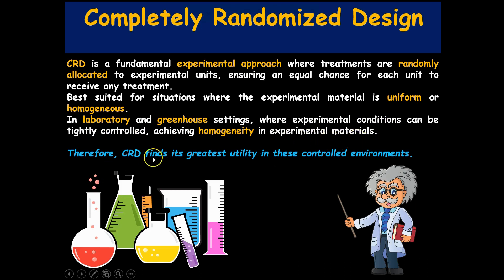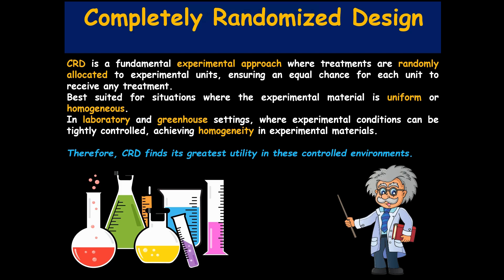CRD finds its greatest utility in controlled environments where experimental conditions can be tightly controlled. It is one of the most flexible designs available for single-factor experiments. Notably, CRD is the only design that uses just two basic principles of experimental design: randomization and replication. There is no use of local control because this design is used when experimental material is uniform or homogeneous, so we don't need any blocking.